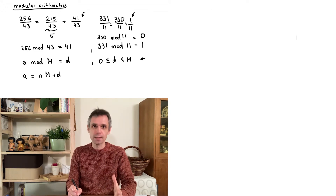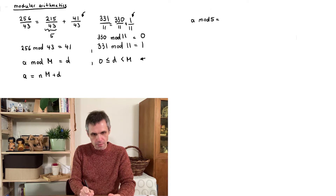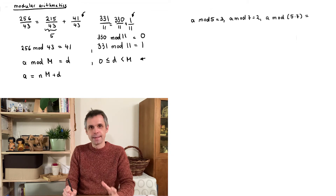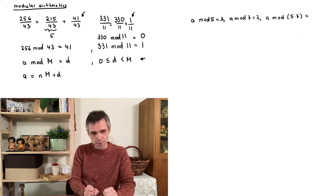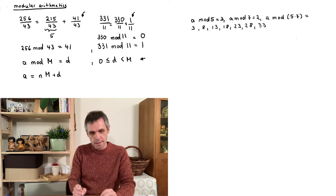Let's look at two interesting features of modular arithmetic. First, suppose we know that a number a is equal to 3 modulo 5, and equal to 2 modulo 7. The question is: what is a modulo 35, which is the product of 5 and 7? There is an ancient theorem known as the Chinese Remainder Theorem that tells us there is a unique solution, which we can determine efficiently by listing all numbers satisfying the first condition that are less than 35: 3, 8, 13, 18, 23, 28, and 33 — exactly seven of them.